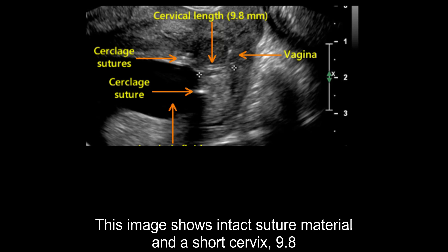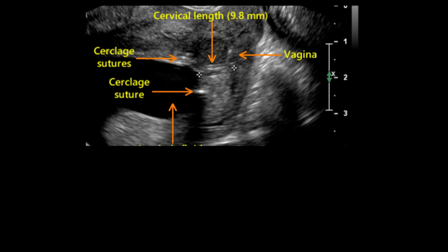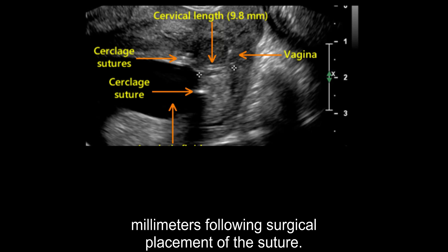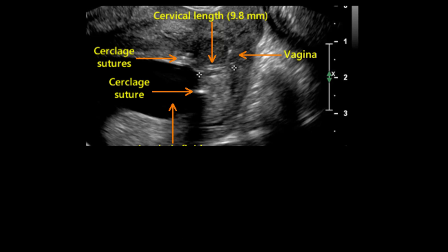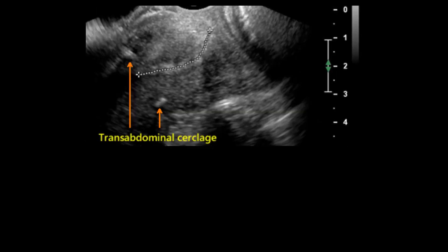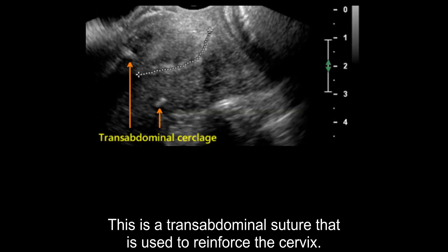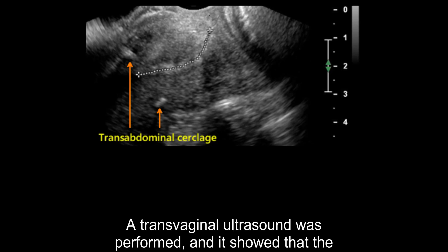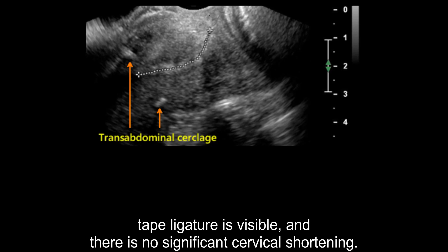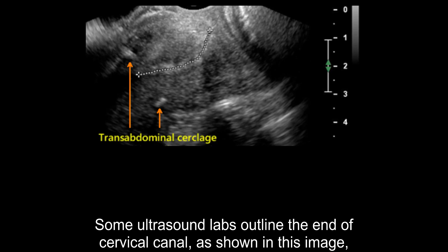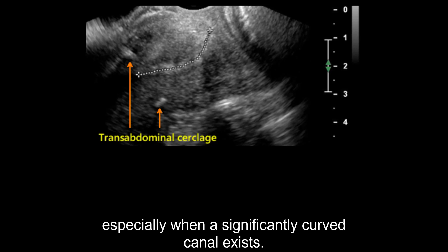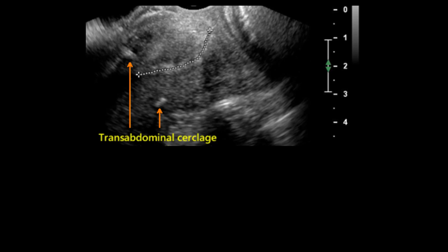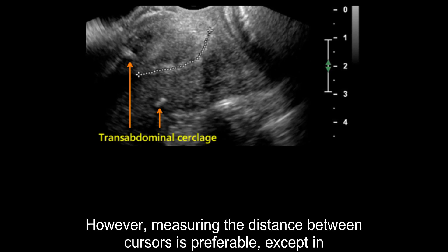This image shows intact suture material and a short cervix of 9.8 mm following surgical placement of the suture. This is a transabdominal suture used to reinforce the cervix. A transvaginal ultrasound was performed, and it showed that the Mersilene tape ligature is visible with no significant cervical shortening. Some ultrasound labs outline the endocervical canal, especially when a significantly curved canal exists. However, measuring the distance between cursors is preferable, except in extreme cases.